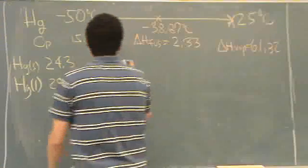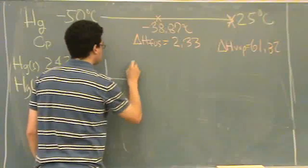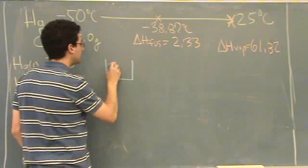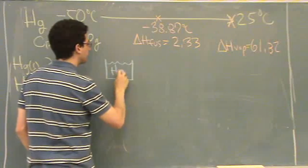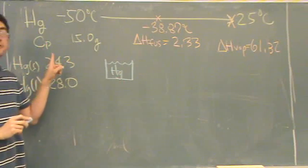Let me draw this part. You have basically, let's say you have a container, and in that container is mercury, and there's 15 grams of it.